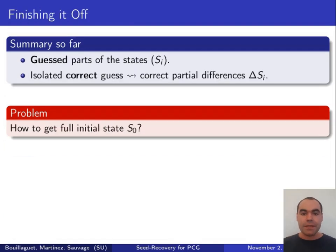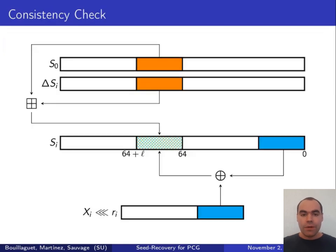So once this guess and determine phase is over, we know the correct values of the guessed bits, and we know the correct value of the partial differences. And from there, we need to get the actual full value of the initial state. But we are still in a much better situation than before, because we can reuse our consistency check to compute the values of all subsequent rotations.